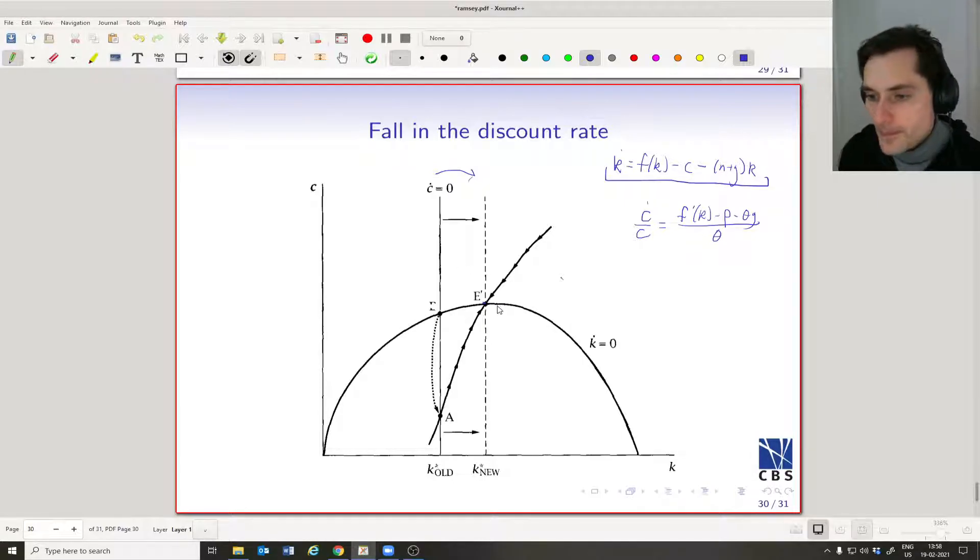But you know, we could increase consumption, steady-state consumption, by moving even farther to the right. It turns out that in this model—I'm not going to prove this here—all equilibria are to the left of the golden rule level of capital. So anytime we decrease the discount rate, whatever we decrease it to, we're always going to remain on the left-hand side.